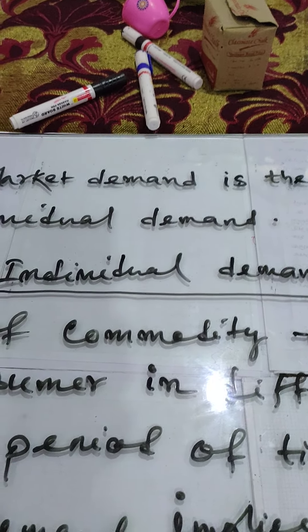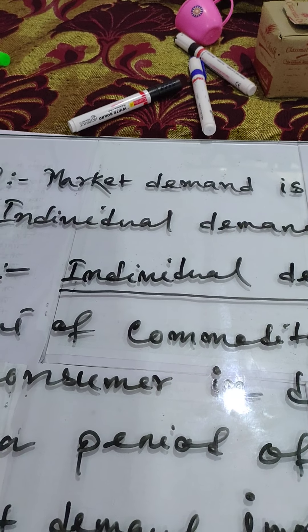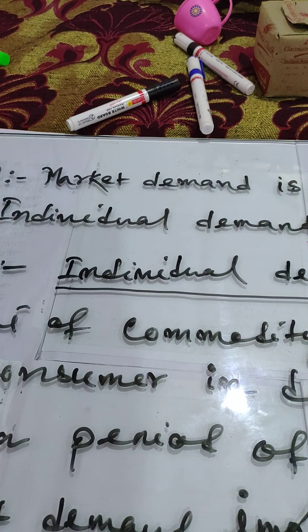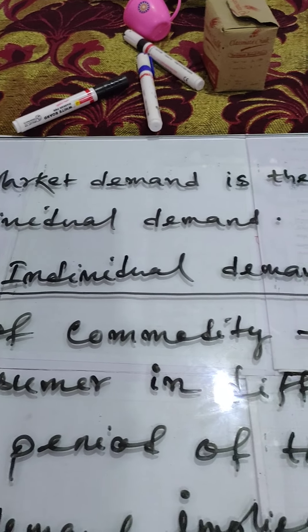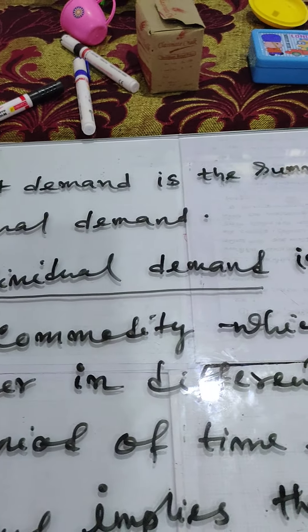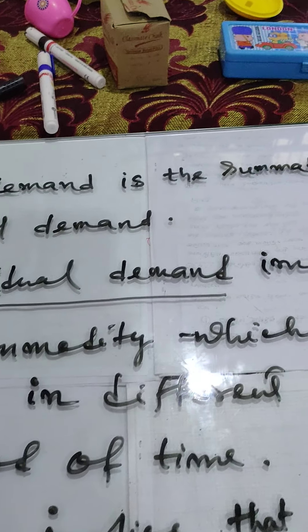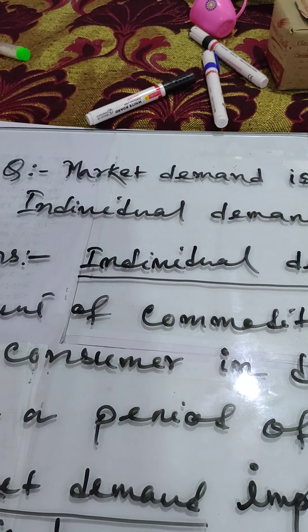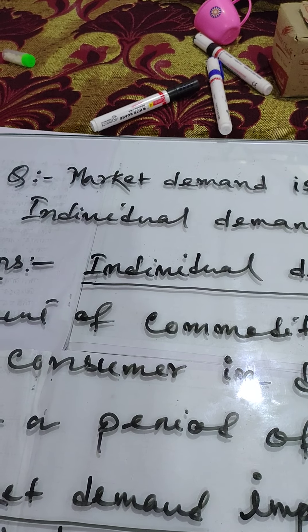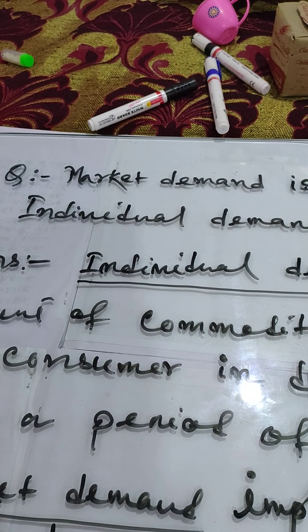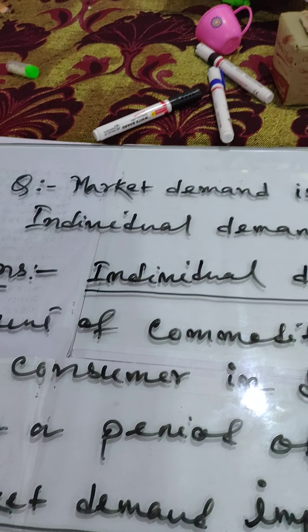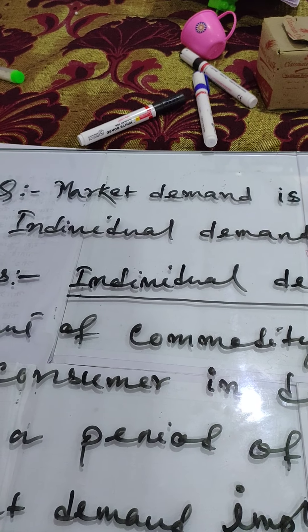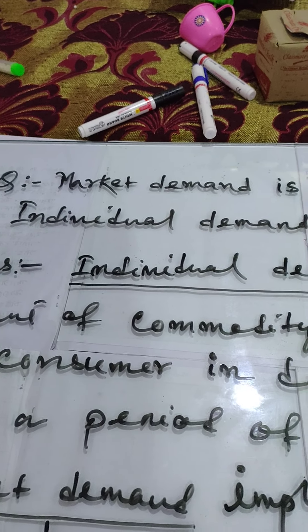That is, when price — other things remaining constant — when price of the commodity increases, demand for the commodity decreases. And in the other situation, there is an opposite relationship between demand and price of the commodity.